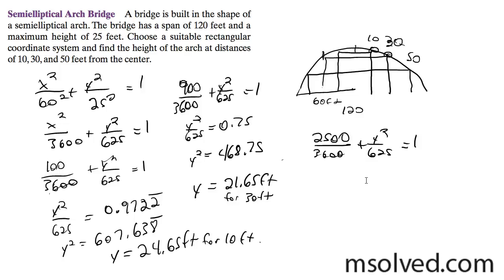You then get from this 0.6944, so we get y squared over 625 is equal to 1 minus 0.6944, equal to 0.3055. And finally, y squared is equal to 190.9722, y is equal to 13.82 feet.